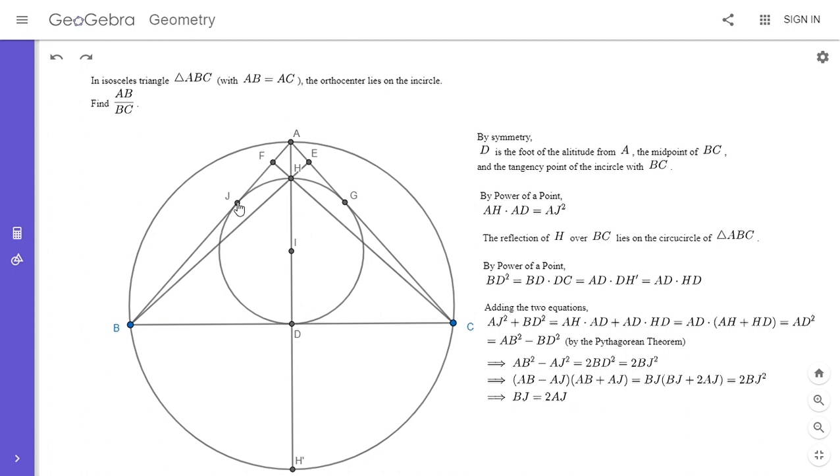And that has to equal the 2BJ squared from above. And then if you simplify that, so you can cancel the BJs. And then with a little more simplification, you just get BJ is equal to 2AJ. So BJ is equal to 2AJ. And now I claim we have enough information to help solve the problem. So AB and BC, I claim those can both be written in terms of BJ and AJ. And so this should help us finish it off. So we have AB over BC.